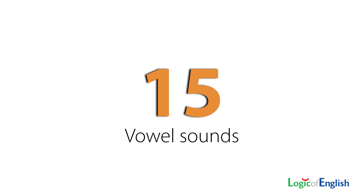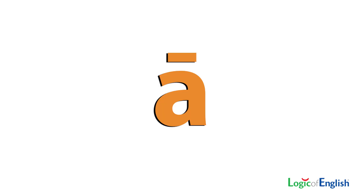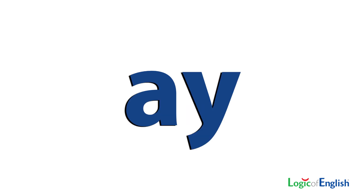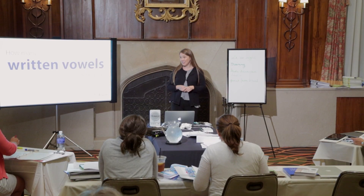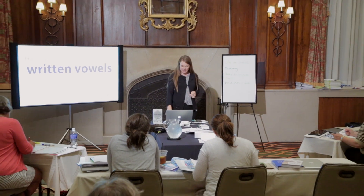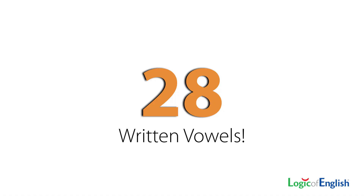There are actually 15 vowel sounds. There are languages where there are only five vowel sounds, which is why there are five written vowels in the Latin alphabet. Then we have the issue that 'a' can be spelled in various ways. How many written vowel phonograms are there in English? There are 28 — 28 different phonograms that make a vowel sound.